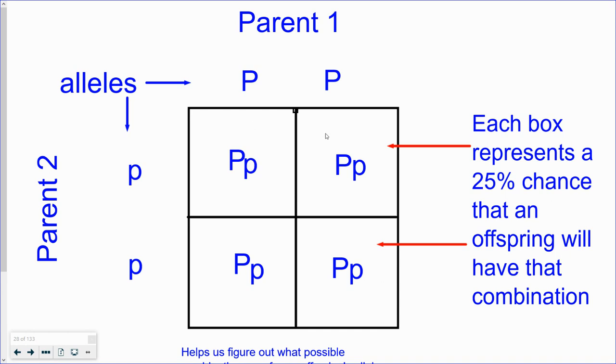Since each box represents a 25% chance, then we can see that 100% of the offspring were going to come out purple.